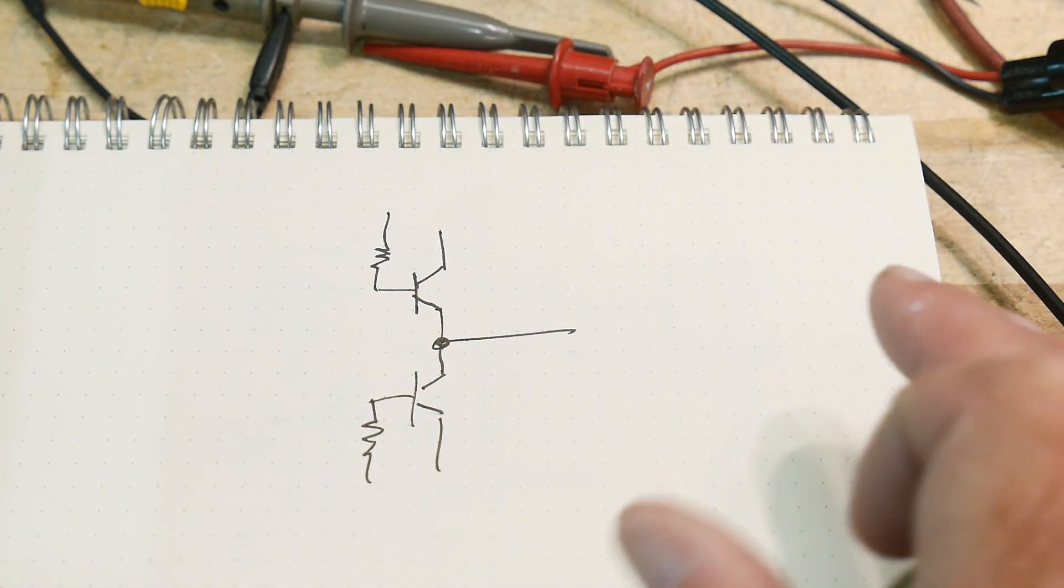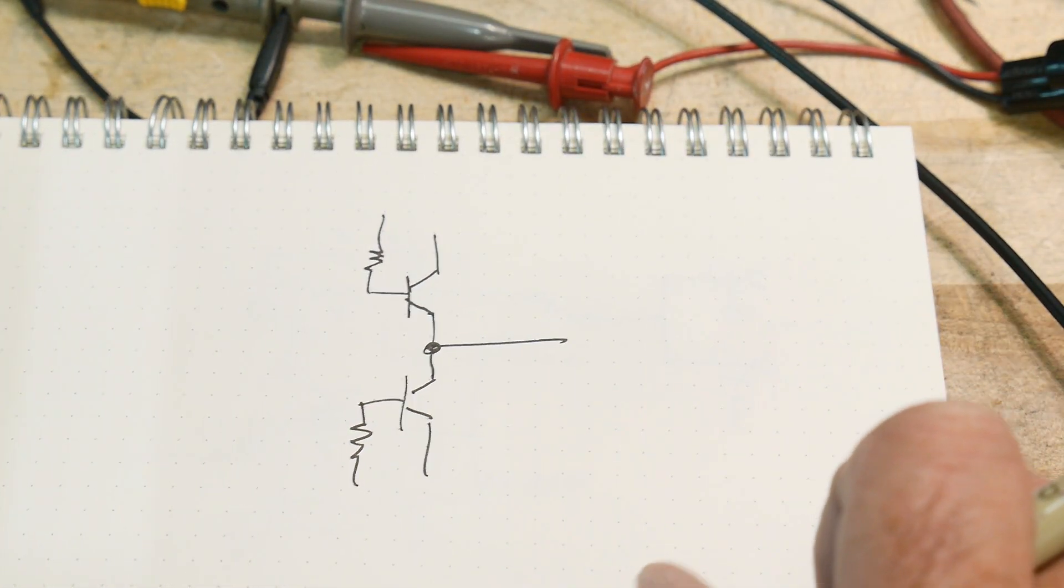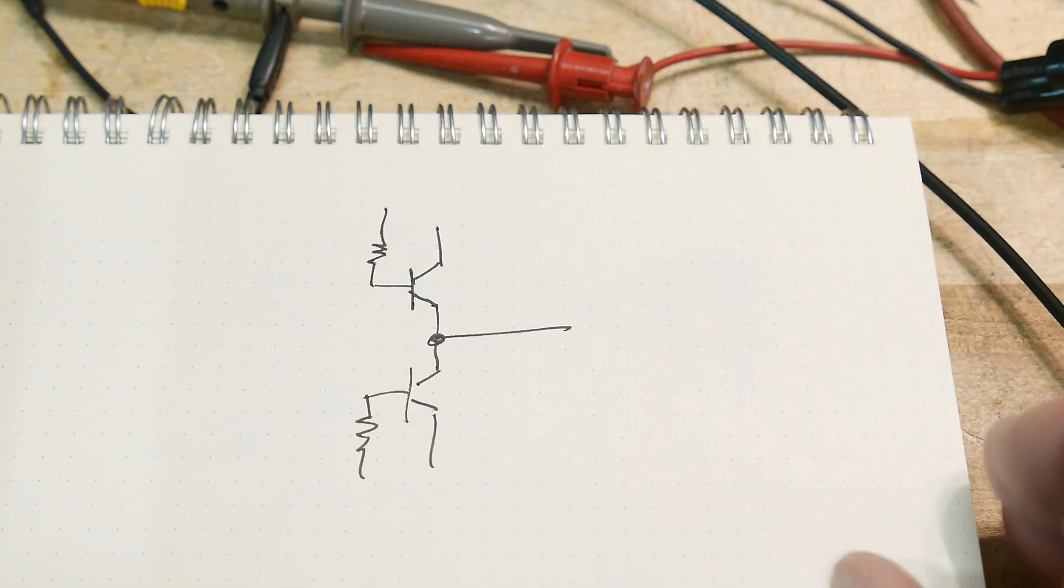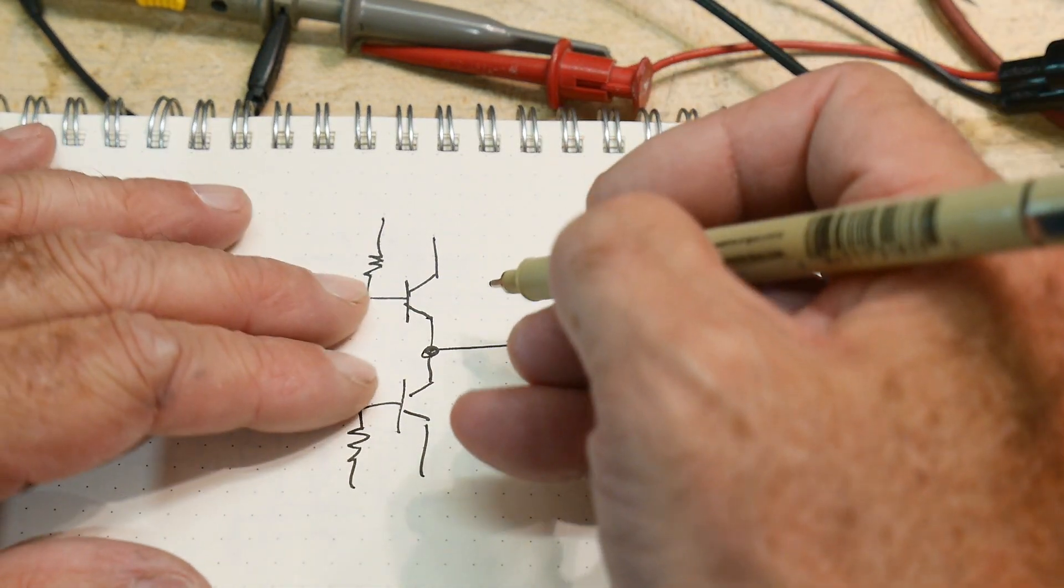Okay, we looked at the crossover distortion last time. So what is crossover distortion? I've talked about this before, but you have an output that looks something like this.